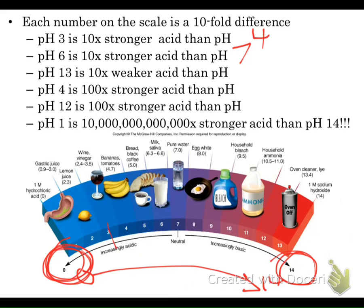pH 13 is a 10 times weaker acid than pH 12. Now, what could I say rather than weaker acid? I could say stronger base. So read it either way — whichever way you can do the mental cartwheels better.